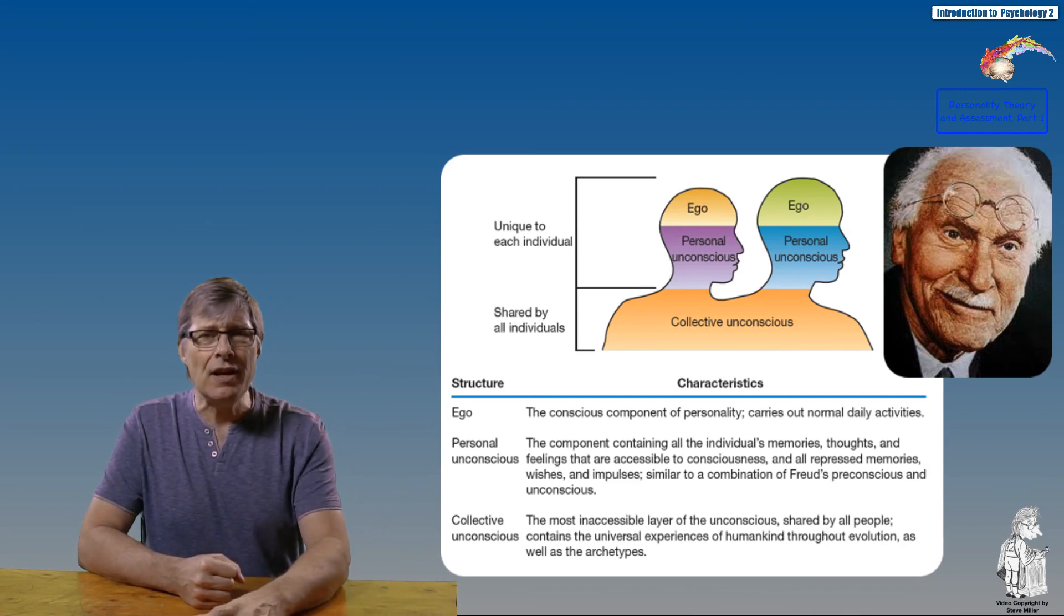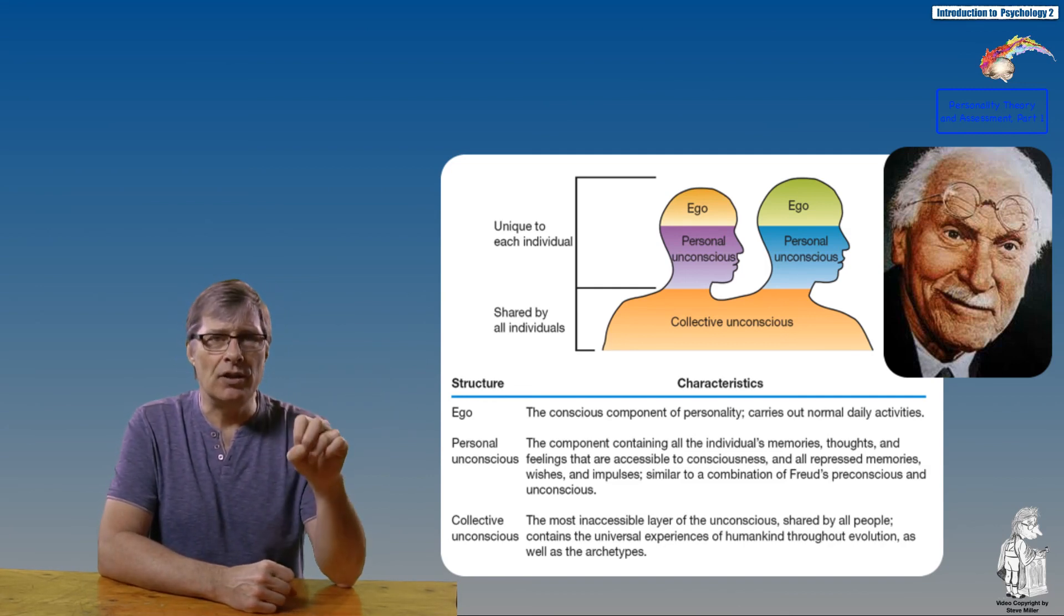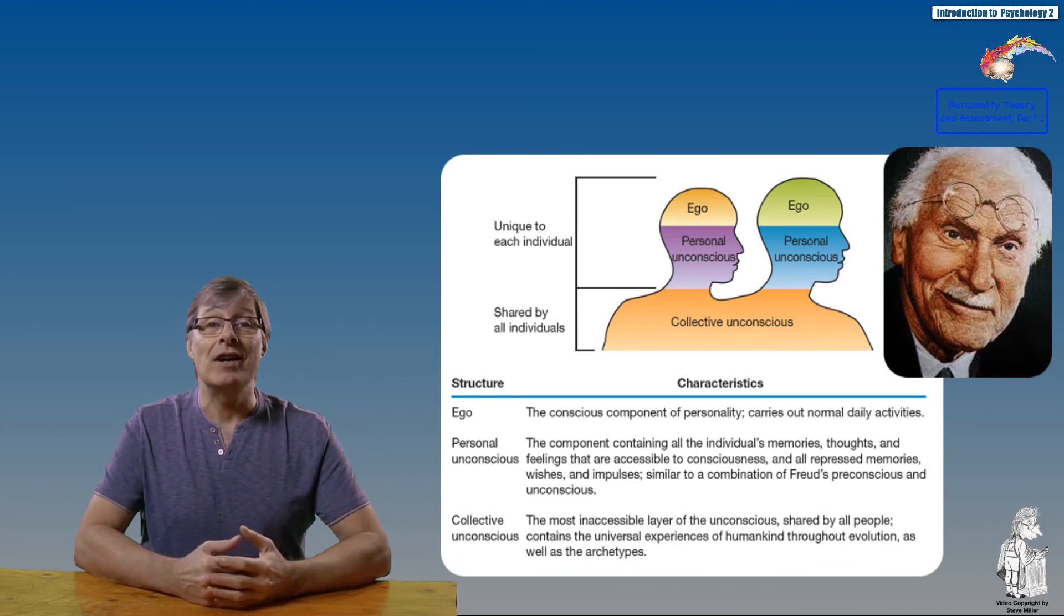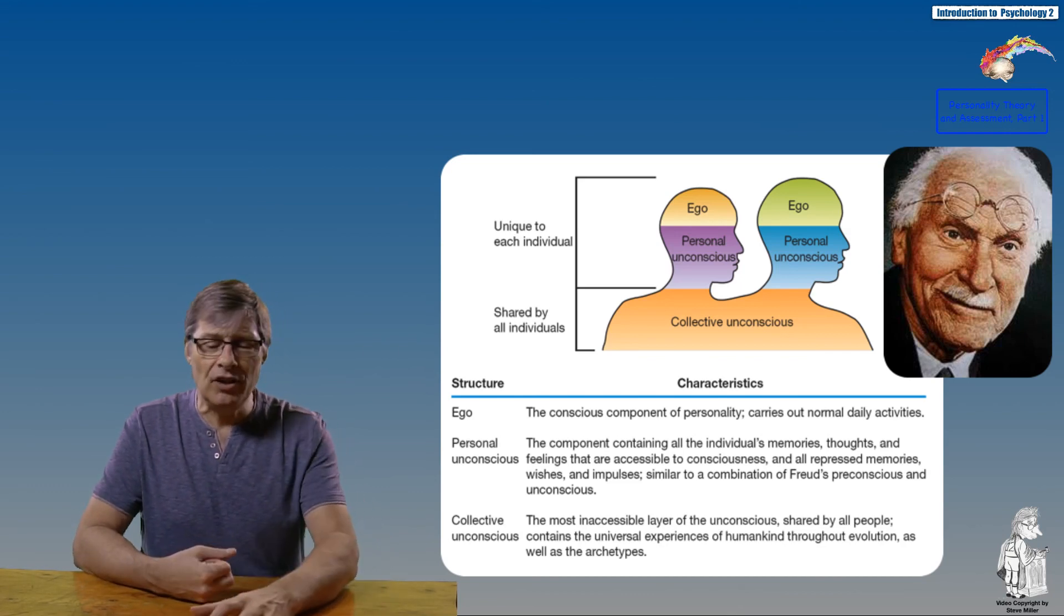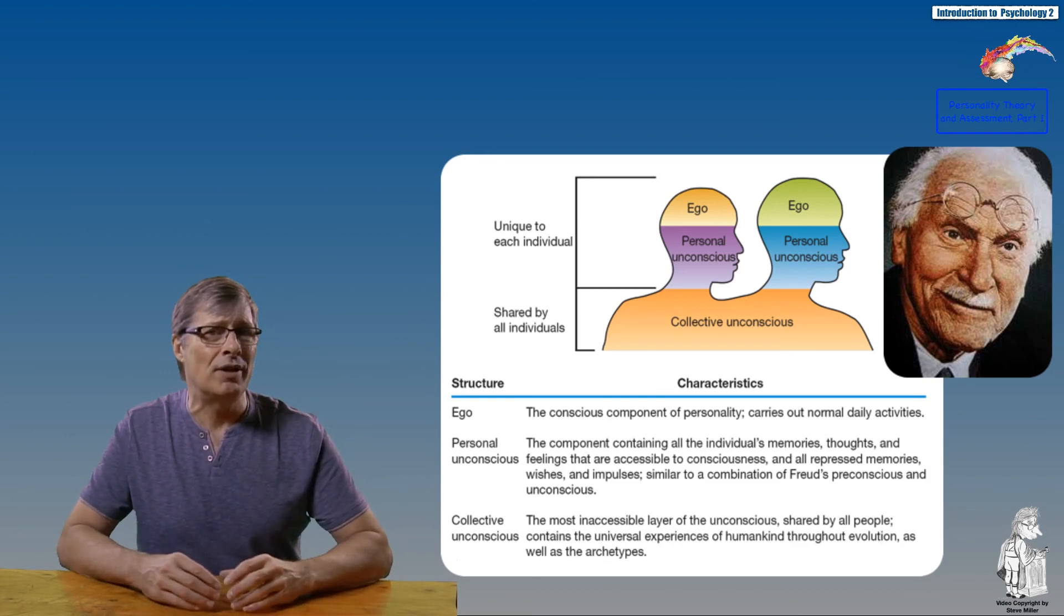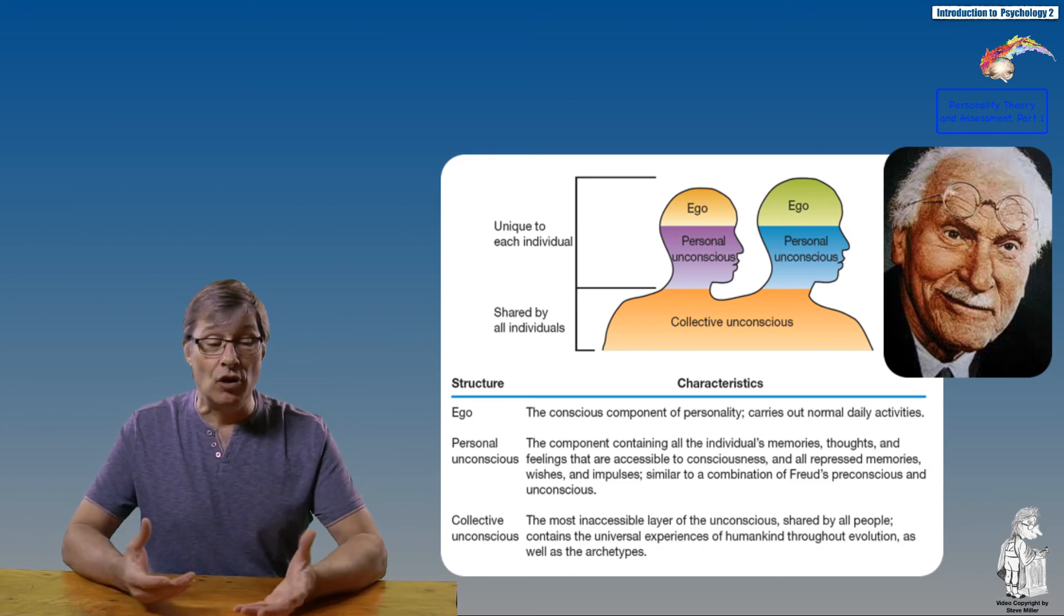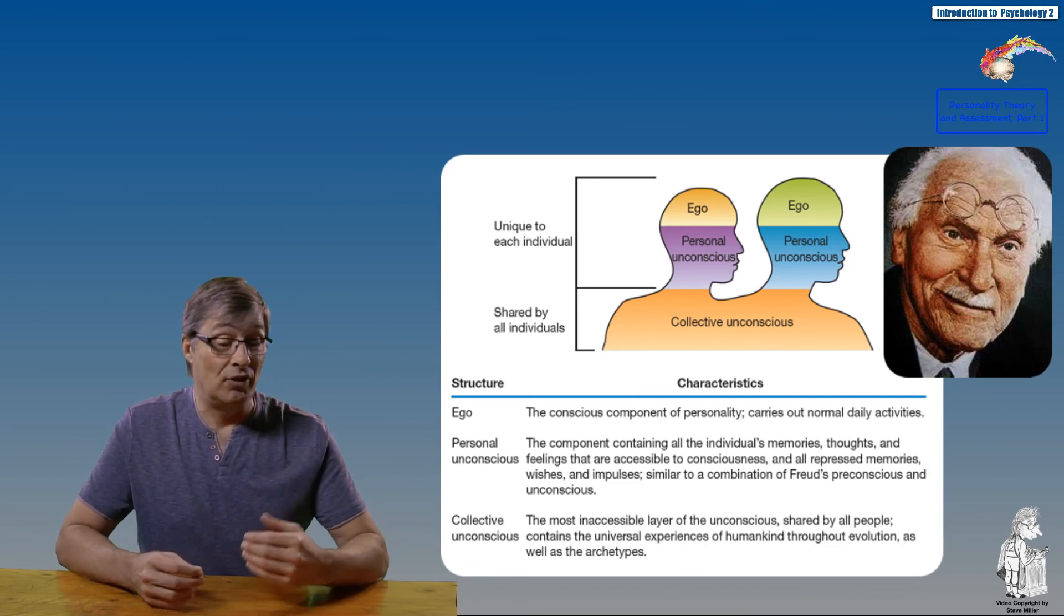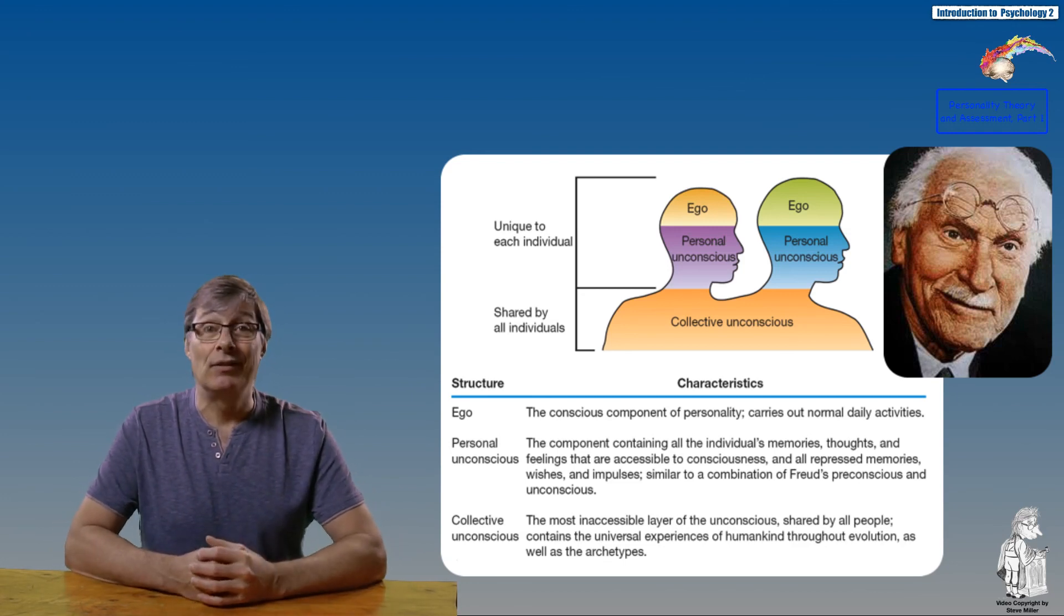Jung's third level was collective unconscious. For Jung, the collective unconscious was the deepest and most inaccessible layer of unconsciousness. It contains the universal experience of all humankind such as myths, dreams, symbols, and religious beliefs. It also contains archetypes—inherited tendencies to respond to universal human situations in a particular way. He would describe humans' fear of dark or apprehension about snakes and spiders as archetypes handed down generation to generation as memories to protect humankind.